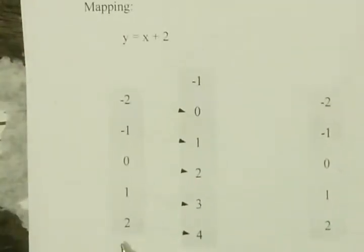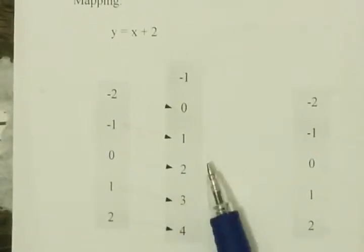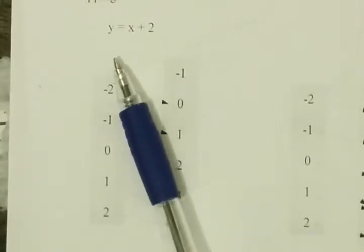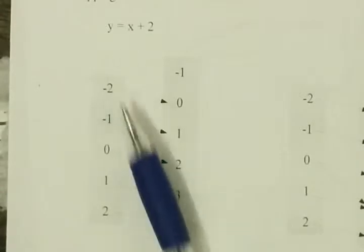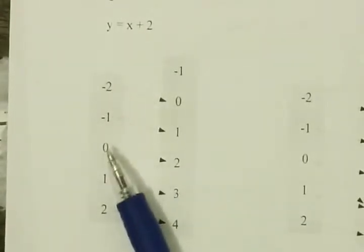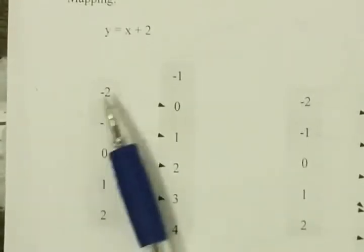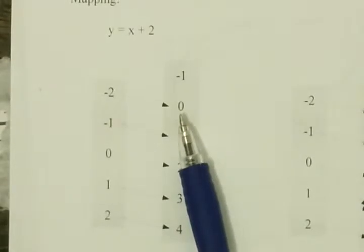On the left, we have all the inputs or all the values of x that you're allowed to plug in. On the right, we have all the y values that you can get out. And I guess when I say all, I'm using that term generously. I wouldn't call it all of them. But examples of x that you're allowed to plug in and examples of the y values that you get out. And we draw an arrow to say that when you plug negative 2 in, you get 0 out.